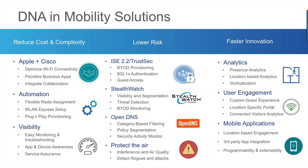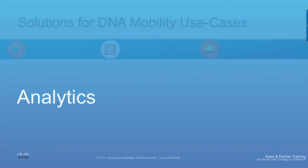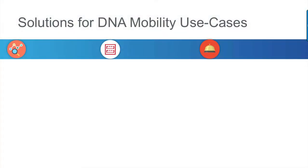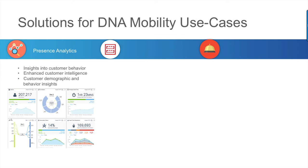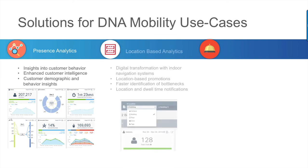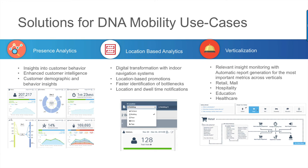Using Cisco CMX on-premise or on-cloud, presence analytics provides insights into customer demographics and behaviors that enhance customer intelligence, for example venue-level visitor and dwell-time information. Taking it one step further, location-based analytics offer indoor navigation, location-based promotions, faster identification of bottlenecks, as well as location and dwell-time notifications. Basic location algorithms provide zone-level correlation, but location accuracy can be enhanced with Fast Locate to provide sub-zone-level navigation and using hyperlocation to assist with product placement and asset management use cases. Verticalization provides relevant insight monitoring with zone-based tagging and automatic report generation for the most important metrics across verticals.